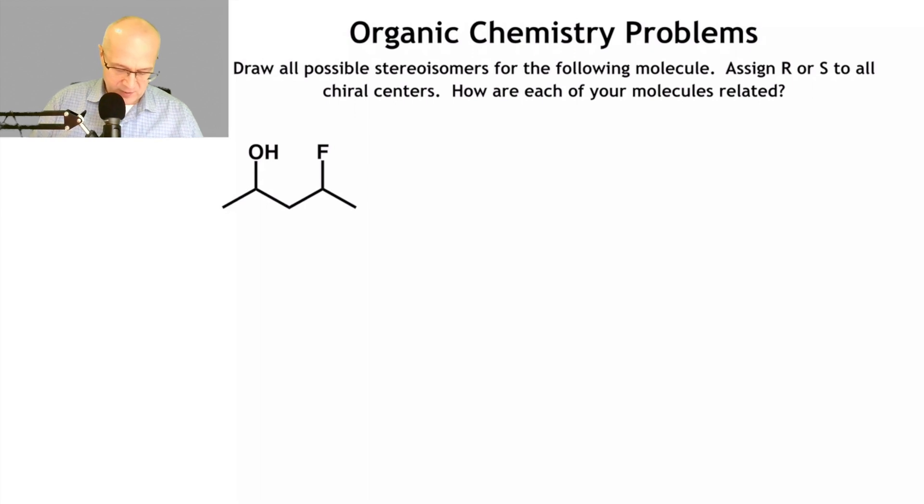But now we need to discuss something called the 2 to the N rule, where N is the number of chiral centers. So N equals 2, one here and one here. There's two chiral centers. So the rule is 2 to the N equals the number of stereoisomers.